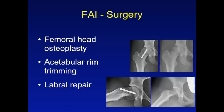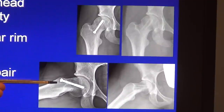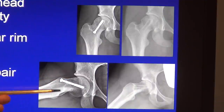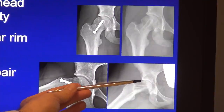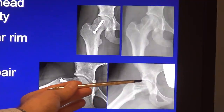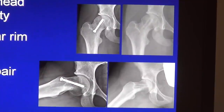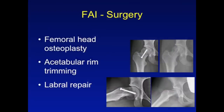If one fails non-operative management, surgical treatment has been very successful. It consists of treating the deformities present in femoroacetabular impingement. In the case of a femoral head deformity, one would perform a femoral head osteoplasty. In this 15-year-old girl who had a previous slipped capital femoral epiphysis, one can see the decreased head-neck offset and reduction in alpha angle. After removal of the screw and femoral head osteoplasty, there is improvement in the head-neck offset and in the roundness of the femoral head. This girl also required a labral repair and has had a very successful outcome. Acetabular rim trimming may also be beneficial in cases of pincer impingement or combined cam-pincer impingement.